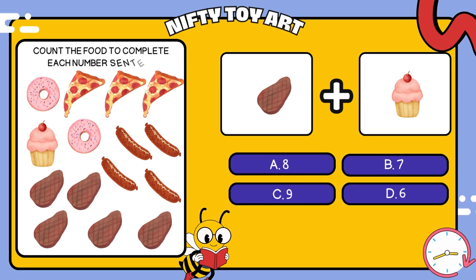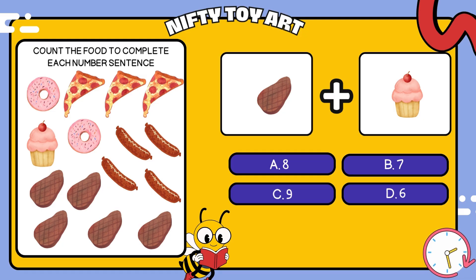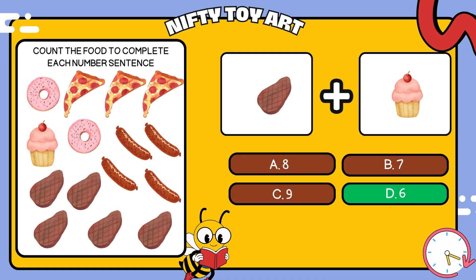We have steaks and cupcakes. How many foods is that in total? That's right, six.